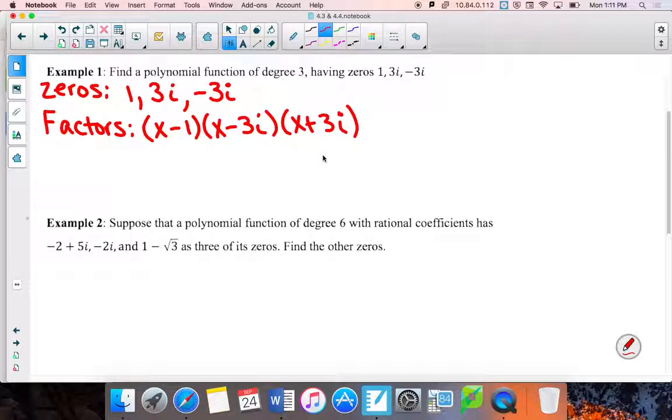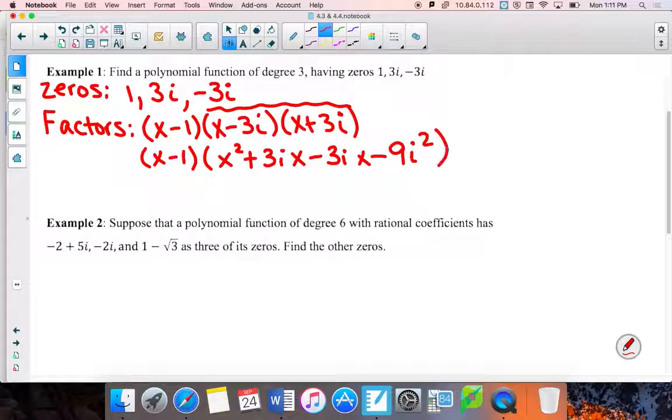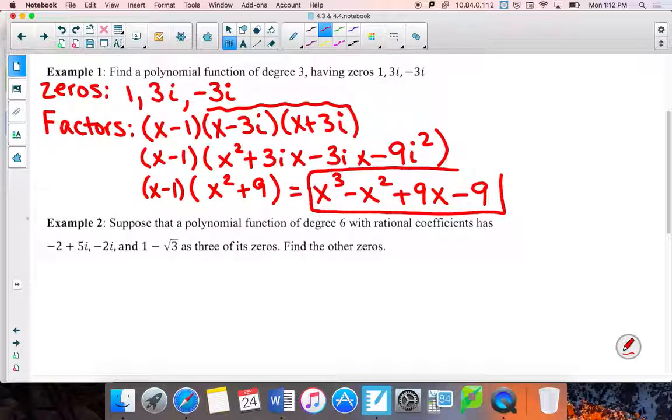Now, if we have to multiply this all out to find the polynomial, please multiply your conjugates first, because things will cancel. It's kind of nice. So if I multiply those first, I'm going to get x squared plus 3ix minus 3ix minus 9i squared. Simplifying that, it's going to give me x squared, but by to your plus 3ix minus 3ix plus 9, i squared being negative 1. Now multiply these two together. I'm going to get x cubed minus x squared plus 9x minus 9. So that's a cubic function with zeros of 1, 3i, and negative 3i.